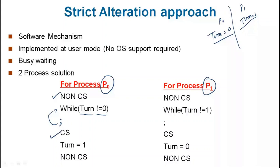When turn is set equal to 1, it means the critical section has been executed by P0. After executing the non-critical section, now what about the P1 process? A similar approach applies for the P1 process — non-critical section first.